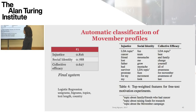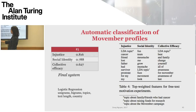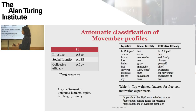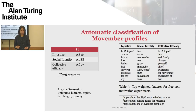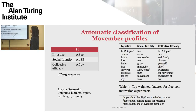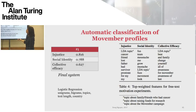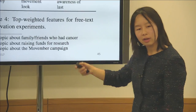We used text classification — a supervised machine learning system — to automatically extract motivations from people's profiles and then test whether these motivations influence how much money people raise. We manually annotated a subset of the data and trained a logistic regression model. For the injustice motivation we obtained a pretty high F-score, and for collective efficacy it was a little bit lower, though annotator agreement was also a little bit lower for that category. Note that these motivations are not mutually exclusive, so someone can have multiple motivations. The top-ranked features make intuitive sense: for the injustice motivation, words like "cancer," "lost," "father"; for the social identity motivation, words like "fun," "team," "mustache" ranked high.